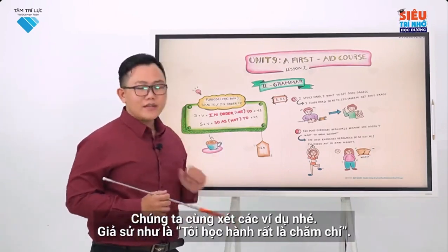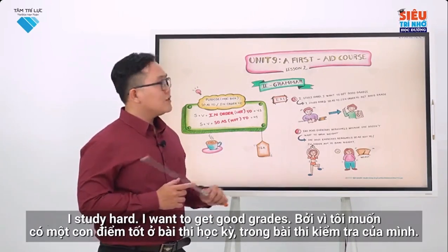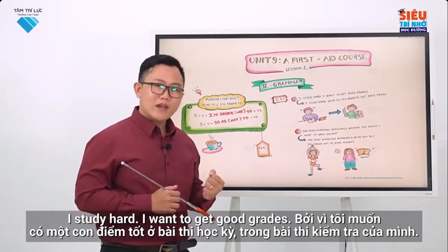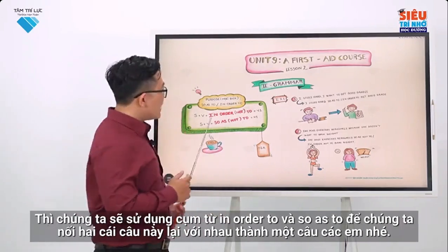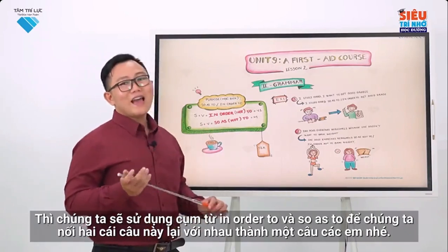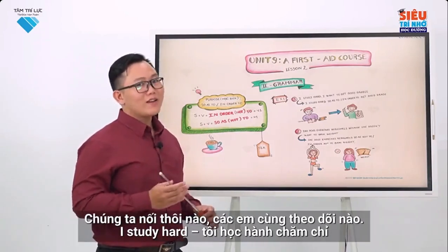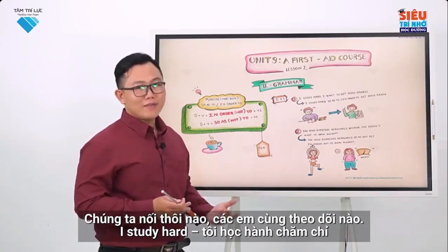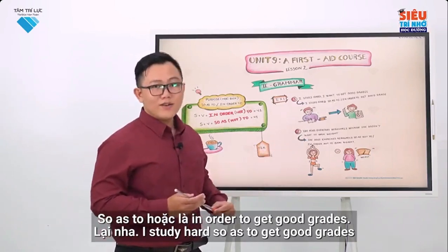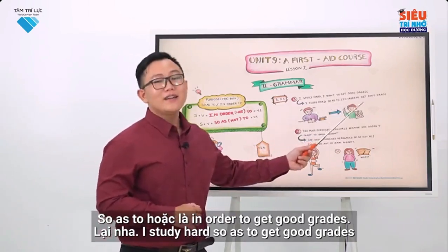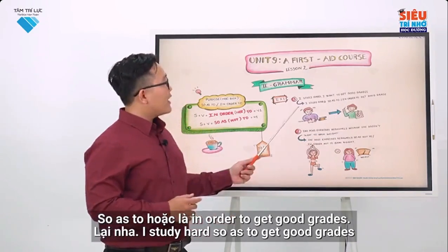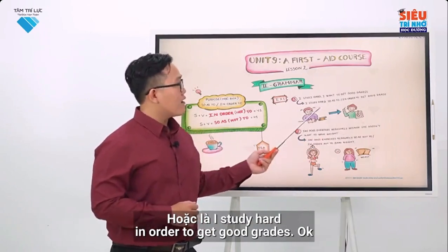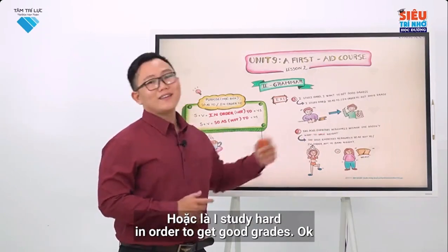Let's take a look at some examples. Suppose: I study hard — I want to get good grades because I want to have good marks in my exams. We use 'in order to' or 'so as to' to connect these two sentences: 'I study hard so as to get good grades,' or 'I study hard in order to get good grades.'